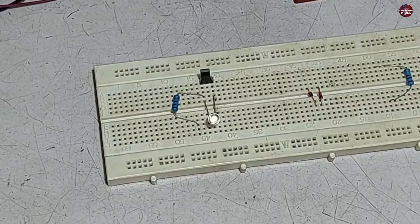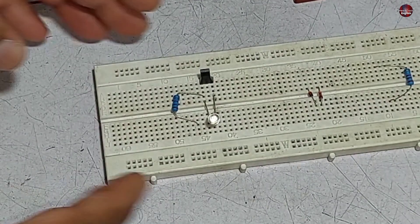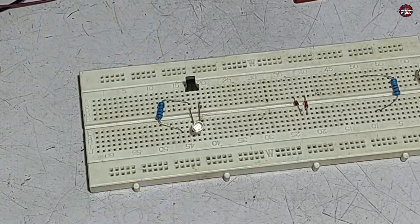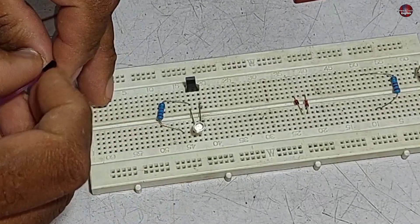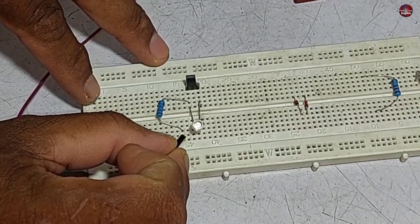Now I will pass electricity through this bipolar hall sensor. Let's see, when I supply electricity, what will be the difference from the unipolar? That is why I am supplying electricity slowly.